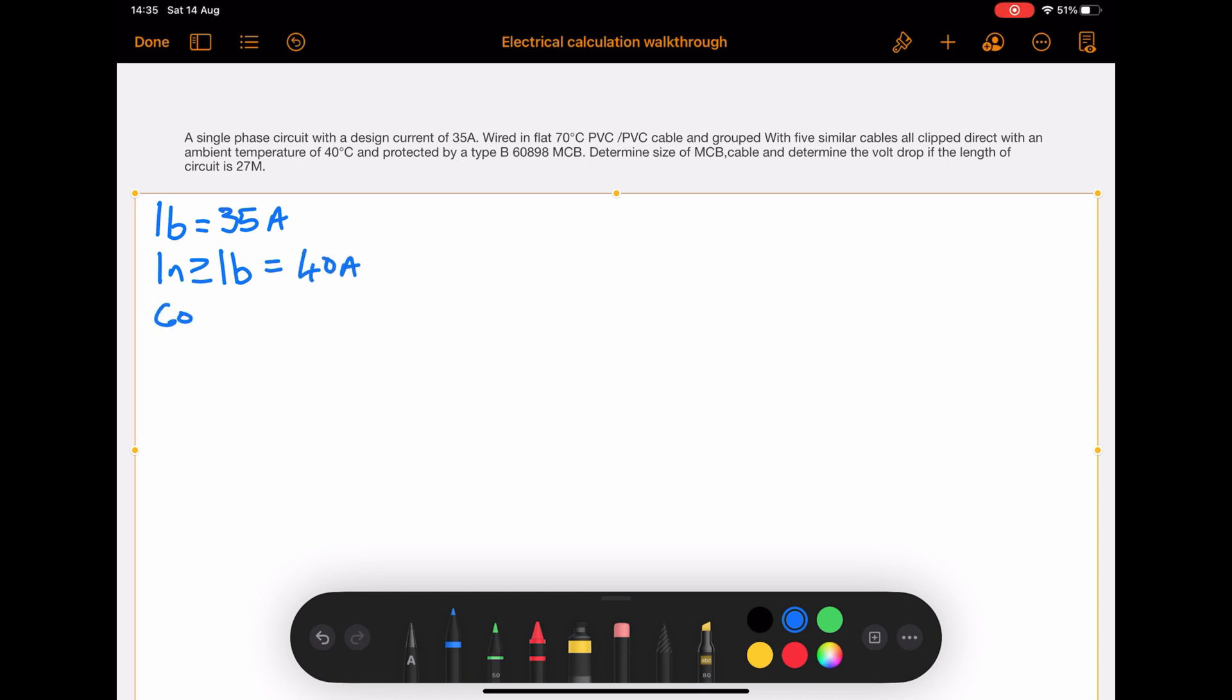Then we need to list any applicable correction factors. In this question we've got CA which is for ambient temperature, that's 0.87 for an ambient temperature of 40 degrees C. Then there's a grouping factor of 0.72, so the question says there are five similar circuits, so the grouping factor is for six circuits clipped direct.